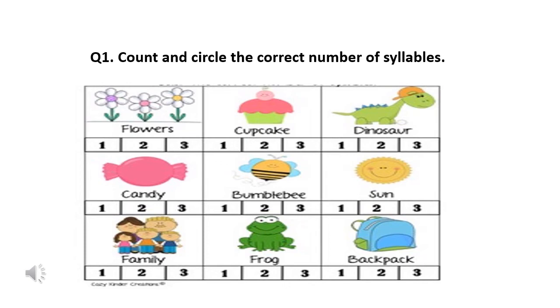Bumblebee. How many syllables? One, two, or three. Sun. How many syllables are there? One, two, or three. You can count the syllables by clapping the hands.